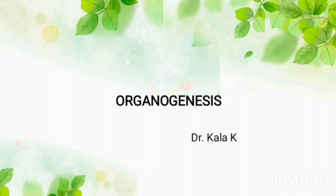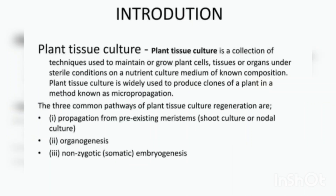Good day everyone. Today we are discussing organogenesis. Plant tissue culture is growing plant cells, tissues, or organs under sterile conditions on a culture medium. It is also called micropropagation because we produce clones of the plant using this method.